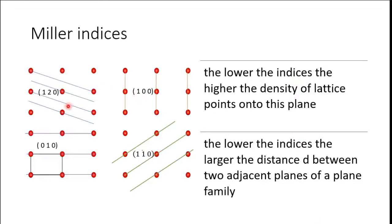Second conclusion hum nikal sakte hain regarding Interplanar Spacing. Interplanar Spacing jo aapke paas perpendicular distance hai between any two consecutive planes — that is Interplanar Spacing. Agar hum yahan par dekhein jahan pe Index ki value high hai, toh Interplanar Spacing kam hai. Aur jahan pe Index ki value low hai, toh Interplanar Spacing high hai. Toh ek reverse relation hai between Index value and Interplanar Spacing: agar aapke paas Indexes ki value lower hogi toh Interplanar Spacing badi hogi, aur vice versa — agar Index ki value high hogi toh Interplanar Spacing ki value kam hogi.